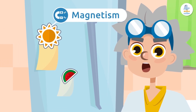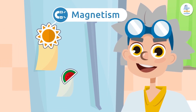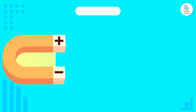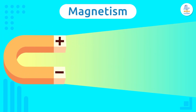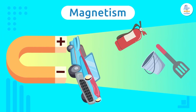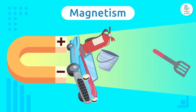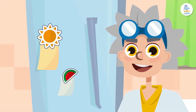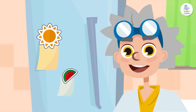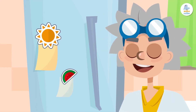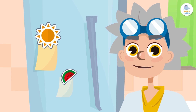Magnetism. I'm sure you've heard of this property before. Magnetism is a physical phenomenon where certain materials attract or repel other materials. Thanks to this property, I can have a fridge full of magnets — I love them!